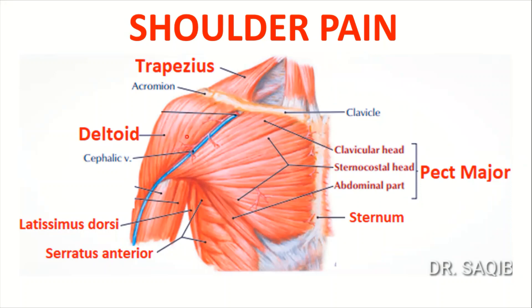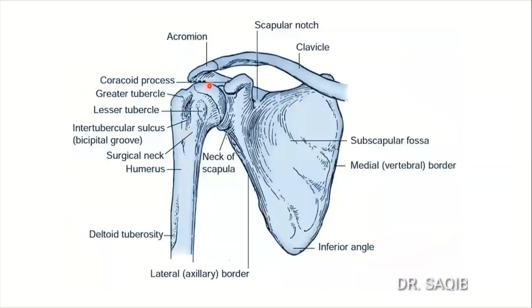This is the bony articulation of the shoulder region. First and most important is the shoulder joint — the glenohumeral joint. The most appropriate name is the glenohumeral joint, and the second joint here is the acromioclavicular joint.